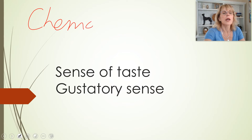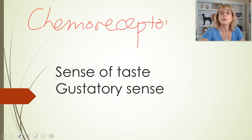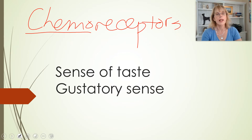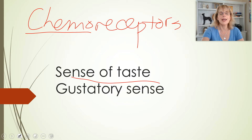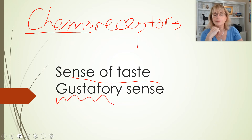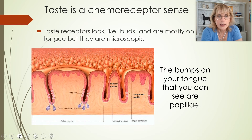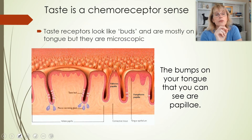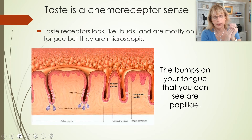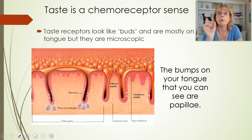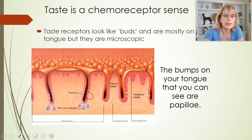Chemoreceptors allow us to sense chemicals — that's why they're called chemoreceptors. The chemicals we can sense, we sense either by smelling them or tasting them. The sense of taste is also known as gustatory; the sense of hearing is auditory. Taste is a chemoreceptor sense. Surprisingly, we cannot distinguish very many flavors by using our tongues — our tongues have a very limited ability to detect chemicals in our food. The chemoreceptor cells are grouped together in what are known as taste buds.